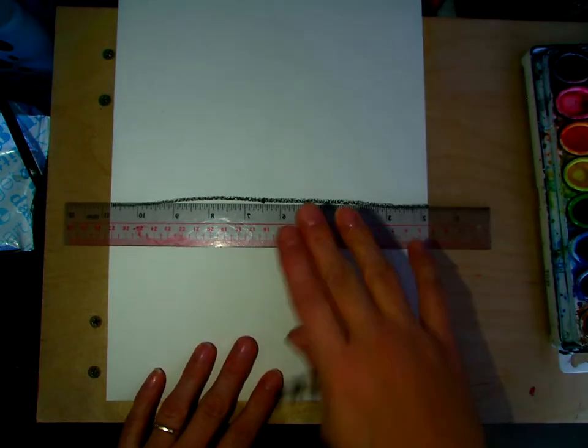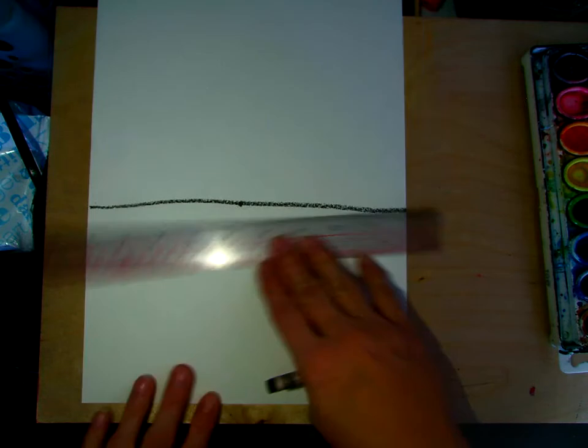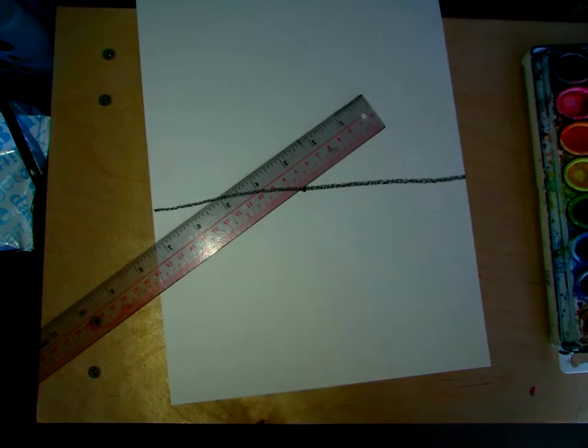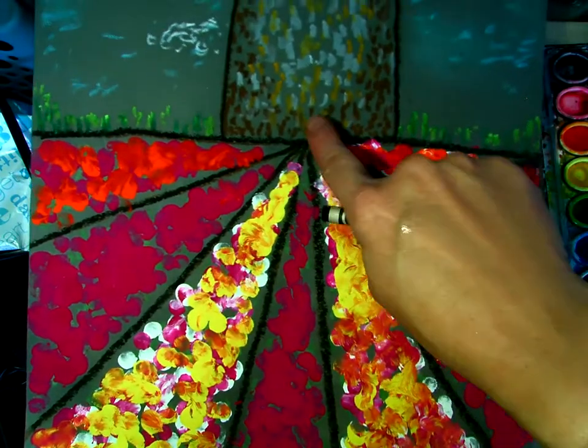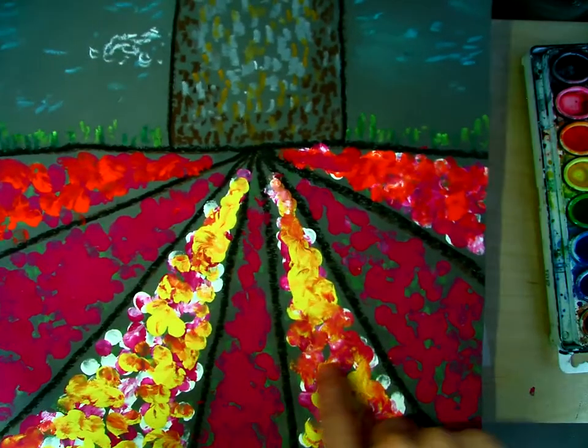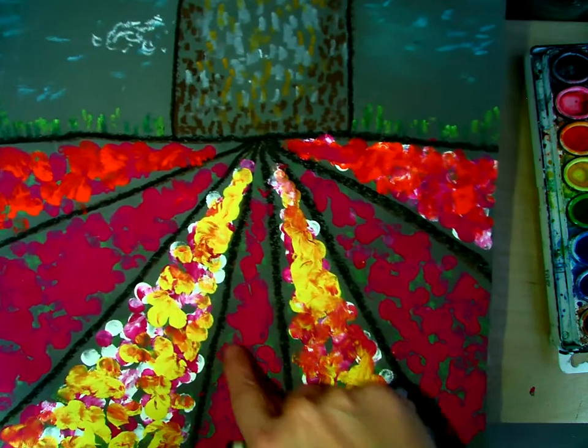I could have used a ruler for that, it's fairly straight. What we're going to do with our ruler is create these radiating lines, these perspective lines. One, two, three, four, five, six - six lines.